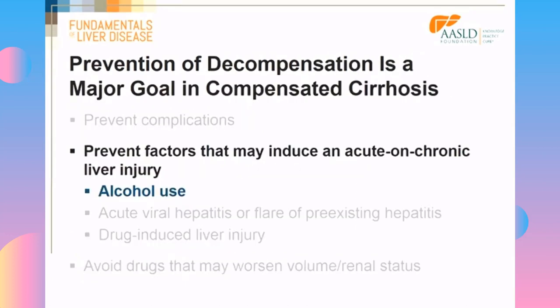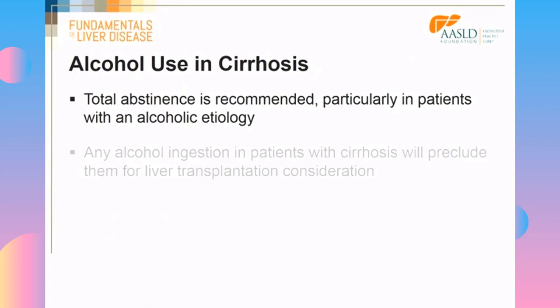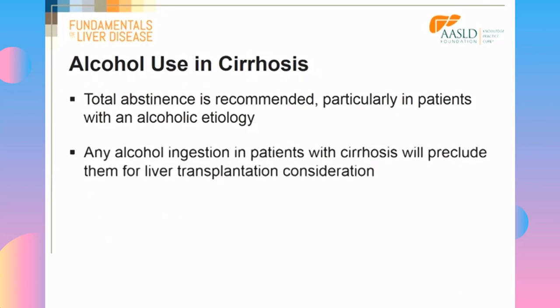The most common factor that may lead to acute-on-chronic liver injury is alcohol. Patients with cirrhosis should have total abstinence from alcohol, especially those with alcoholic cirrhosis. Any alcohol ingestion in patients with cirrhosis will preclude them from getting a liver transplant or even being evaluated for liver transplant, so it is very important that the patient does not use any alcohol.